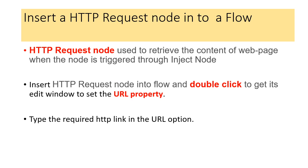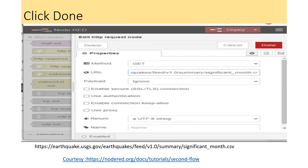Insert the HTTP request node into the flow and double-click it to get the edit window, where we are going to set the URL property. You need to type the required URL in order to fetch data from the particular URL. Here we are going to give an earthquake dataset URL. So I am entering the website address for the earthquake dataset.